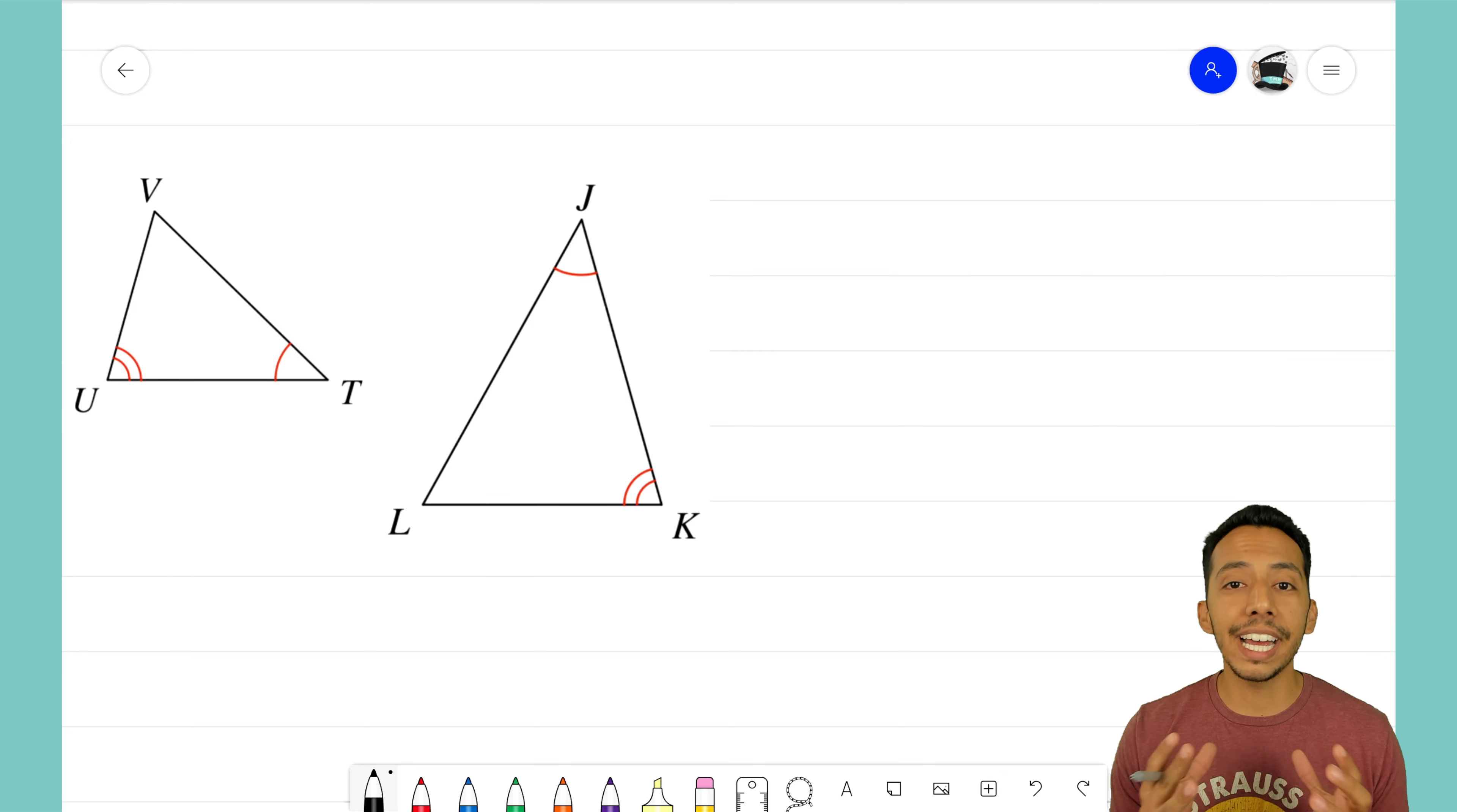Let's go ahead and do that. We'll start off with the measure of angle T and the measure of angle J. Those two angles are equal, so I'm going to write that out as my first fact.